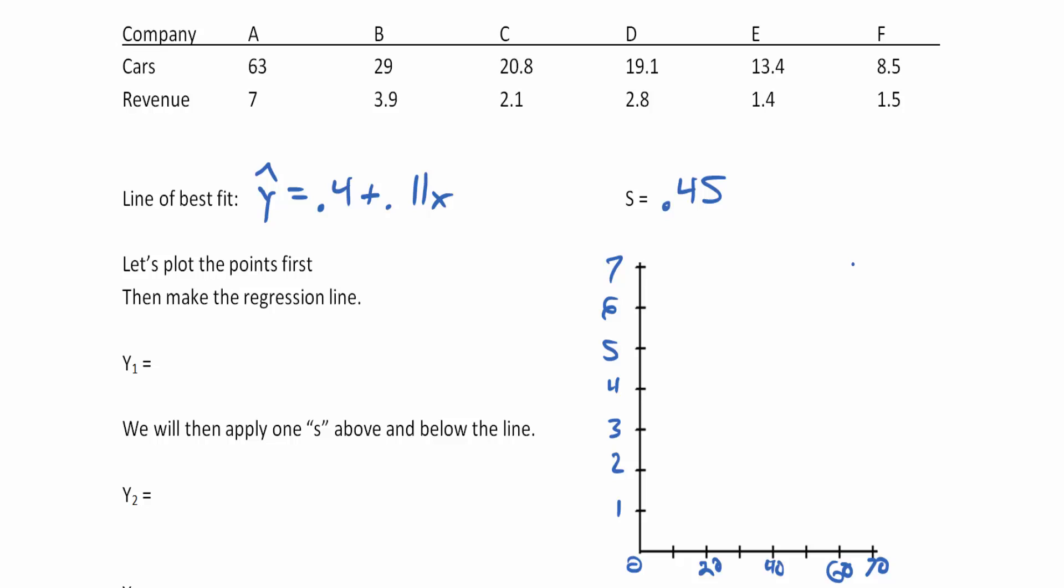Sixty-three was here at seven. Twenty-nine, a little before thirty, was at 3.9, a little before four. And 20.8, a little after twenty, is a little above two.